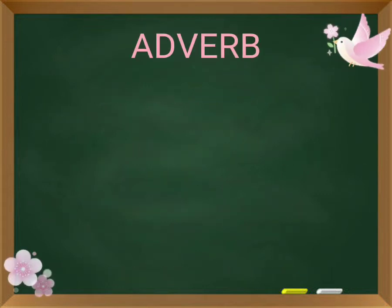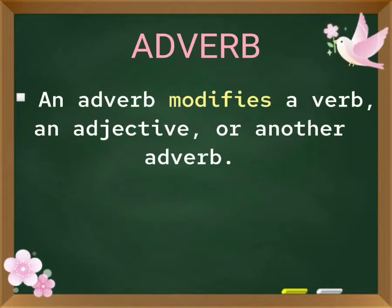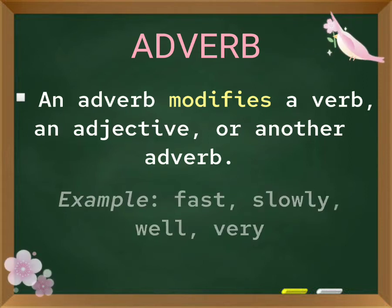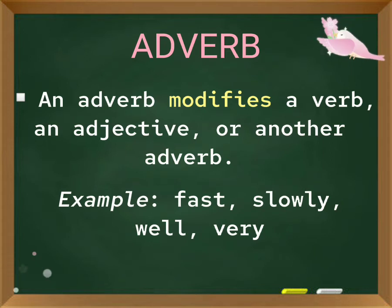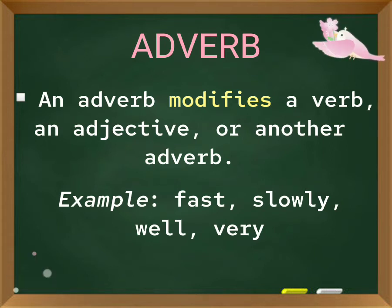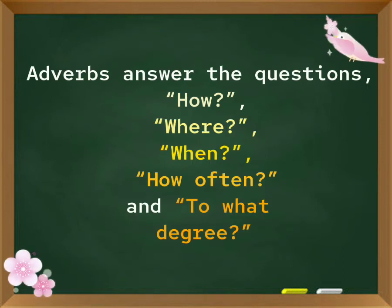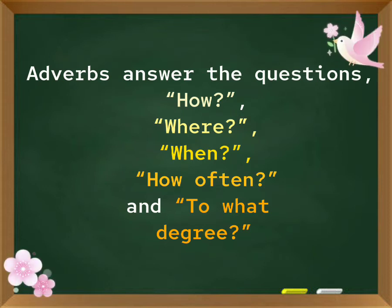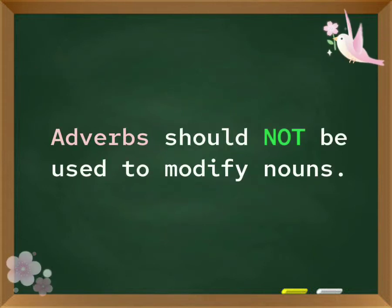Adverb. An adverb modifies a verb, an adjective, or another adverb. Examples: fast, slowly, well, very. Adverbs answer the questions: how, where, when, how often, and to what degree. Adverbs should not be used to modify nouns.